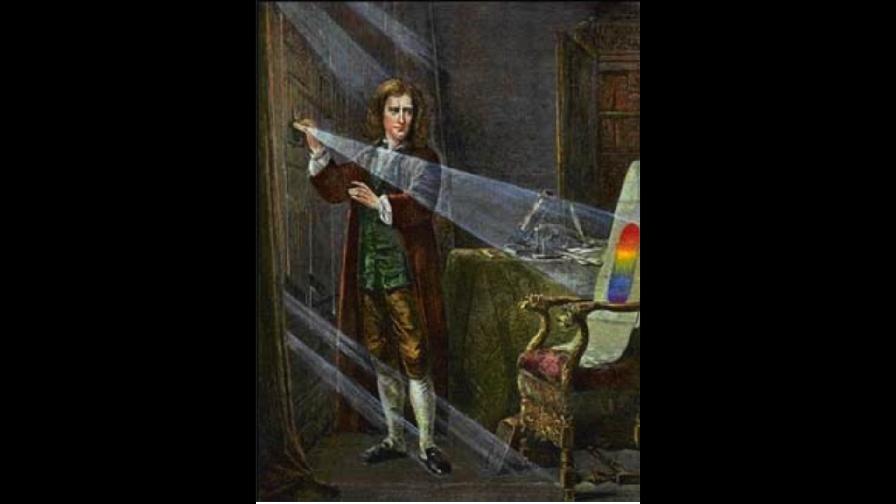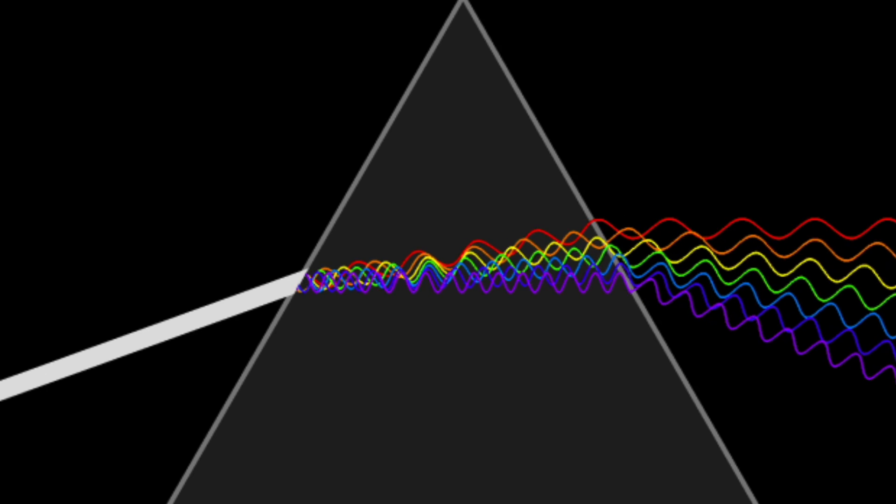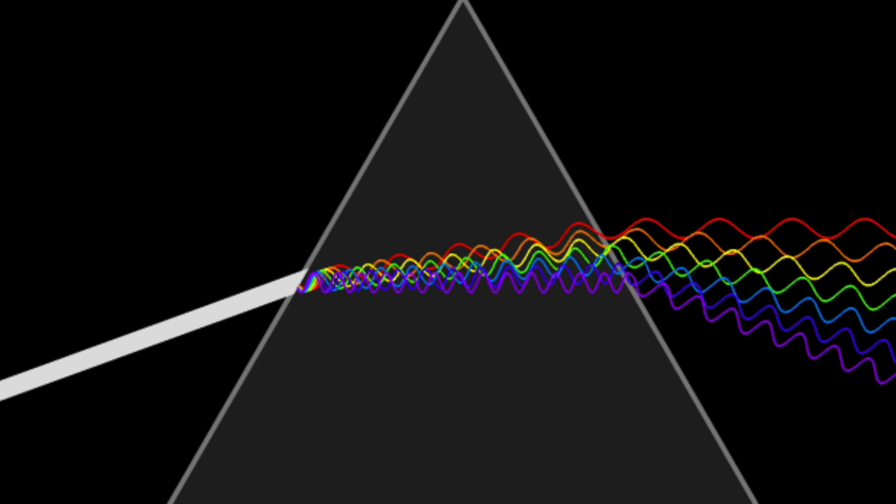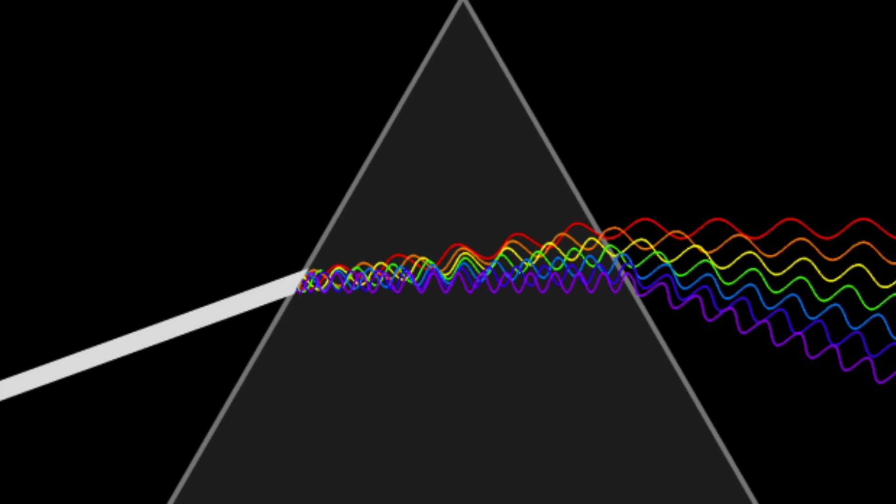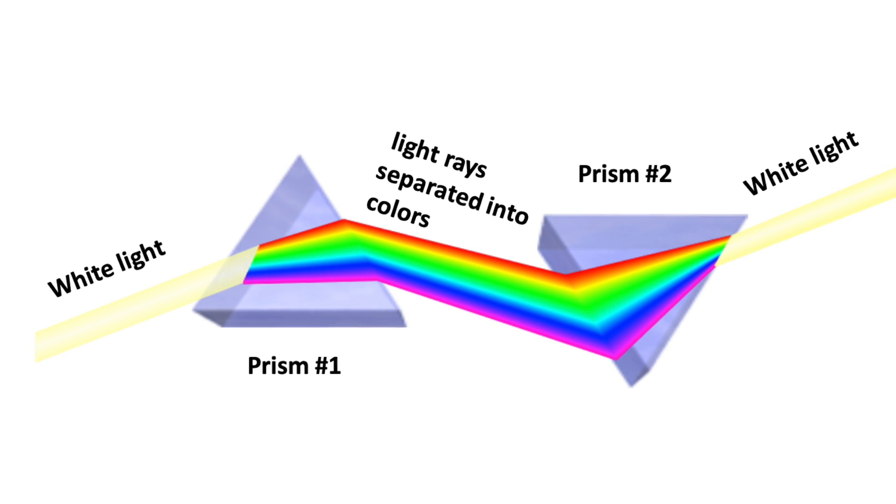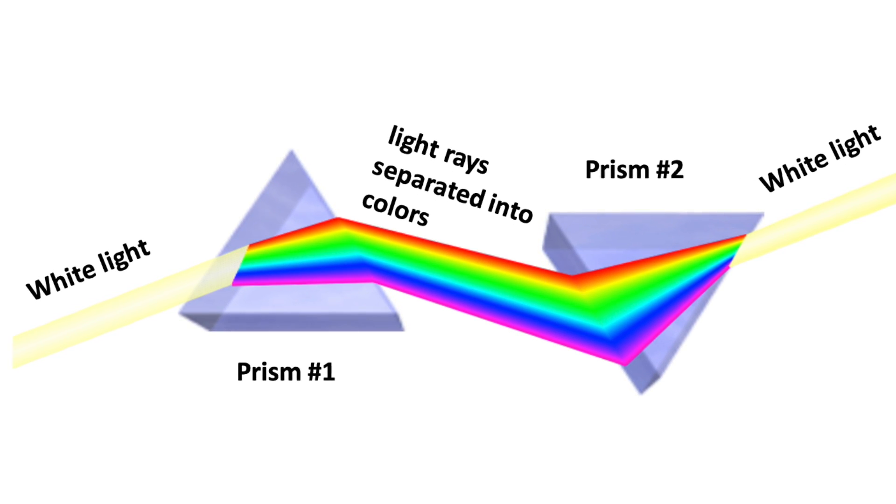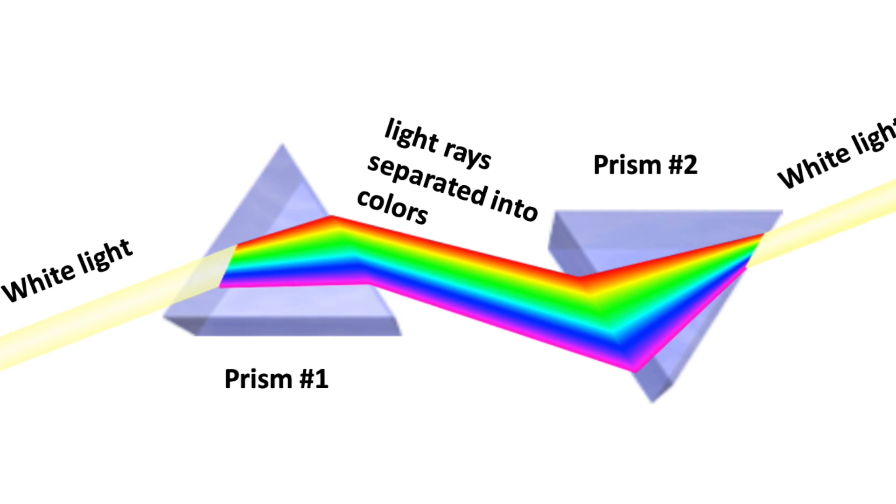In the 16th century, Sir Isaac Newton began a series of experiments with sunlight and prisms, and he demonstrated that clear white light was composed of seven visible colors. Newton also found that the separated colors could go into a second prism and reform back into white light.